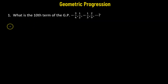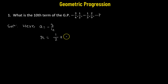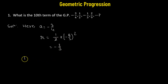First, we will specify the first term. Here the first term, represented by the letter a, is negative 3 over 4. Since the sequence is already in geometric progression, we can obtain the common ratio r by dividing the second term by the first term — we multiply by negative 4 over 3, giving us a common ratio of negative 2 over 3.